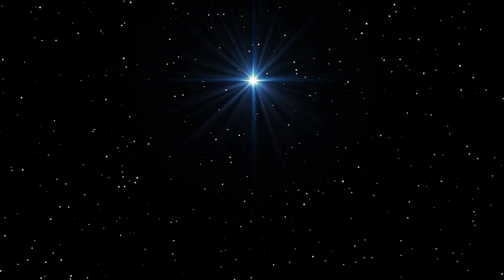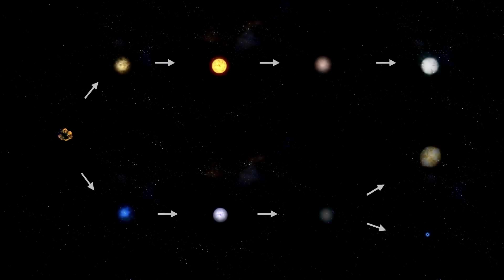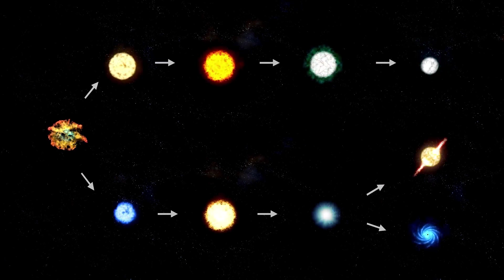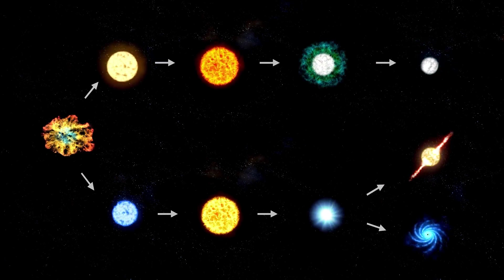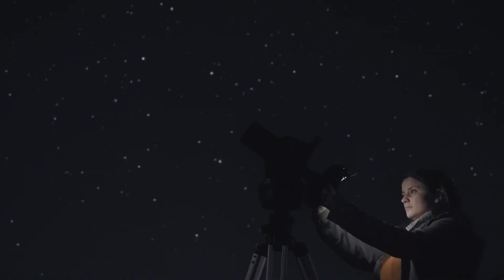However, the scarcity of light from Betelgeuse is not only due to the distance that separates us from it. Betelgeuse is what is known as a pulsating red supergiant, which means that it is an ancient massive star that undergoes expansions and contractions. During these cycles, its brightness can vary in the night sky, becoming more intense or dimmer.